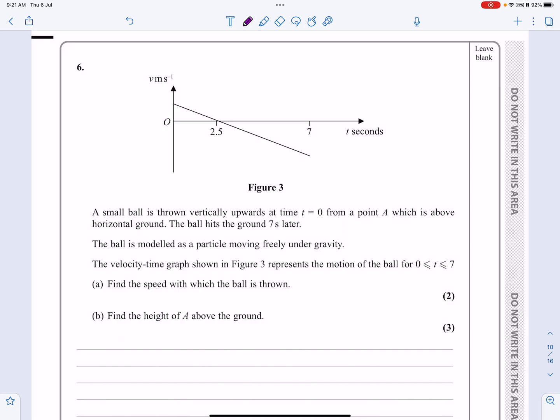Okay, this is the M1 paper from October 2021, question number six. And as you can see by looking at this, this is going to be a kinematics question with vertical motion under gravity. Okay, let's have a look at it.